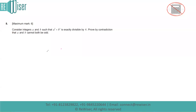In this question, we are considering integers a and b such that a squared plus b squared is exactly divisible by 4. We need to prove by contradiction that a and b cannot both be odd. Whenever we say prove by contradiction, we take the opposite statement — so by contradiction, we assume the negation of what we want to prove.